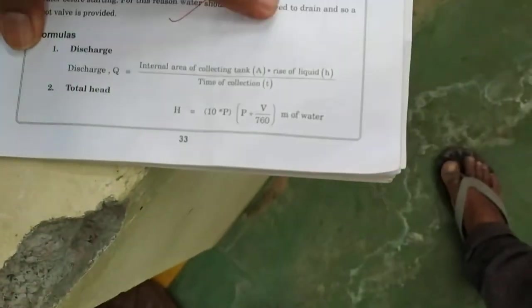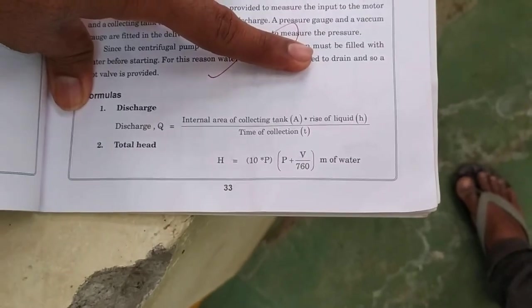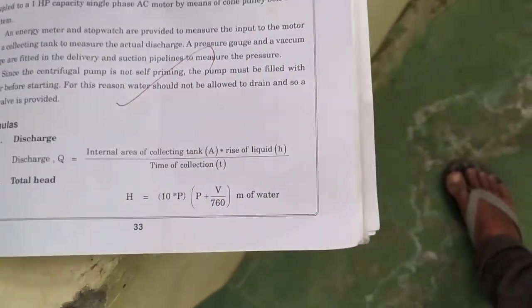Discharge will be calculated by this formula: that is area of internal collecting tank into rise of liquid, that is 10 centimeter, divided by time of collection.